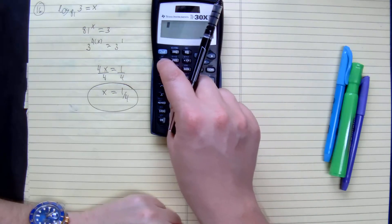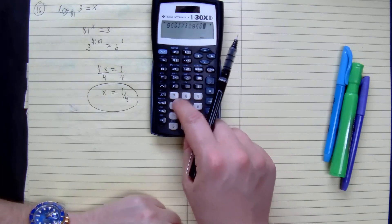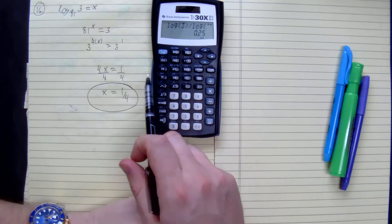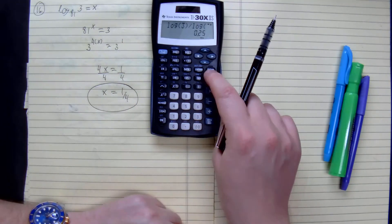You can do log of 3 divided by log of 81. If you do it this way, you get 0.25, which is 1 fourth. So if you use the change of base formula, that's fine too.